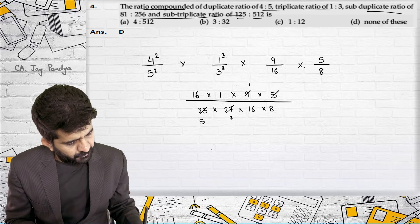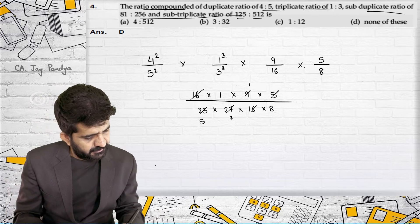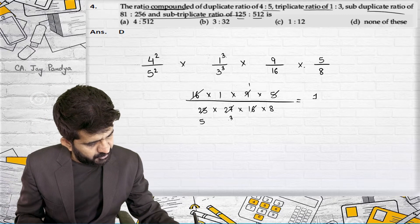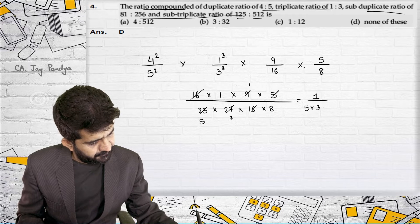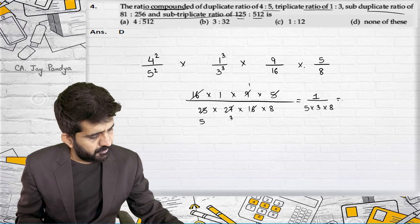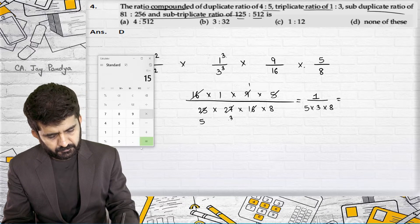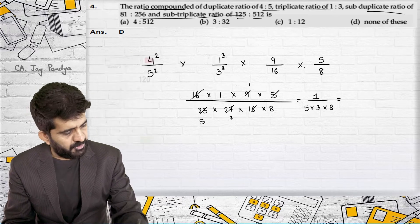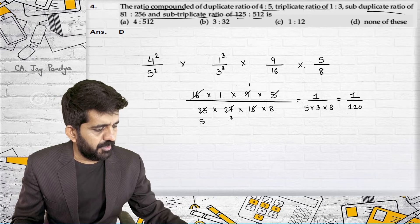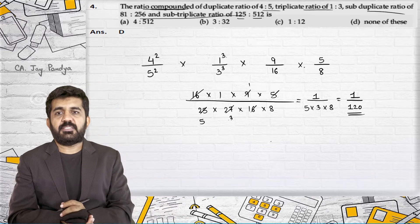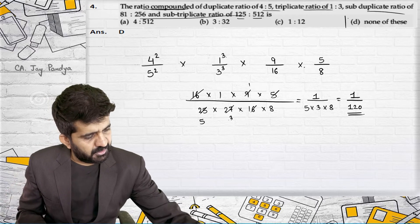After cancellation, in the numerator the 16 gets cancelled with the 16 in the denominator, leaving 1 in numerator and 5 into 3 into 8 which is 120 in the denominator. So the answer is 1 divided by 120. It is neither A, B, nor C, so the correct answer is none of these, which is D.